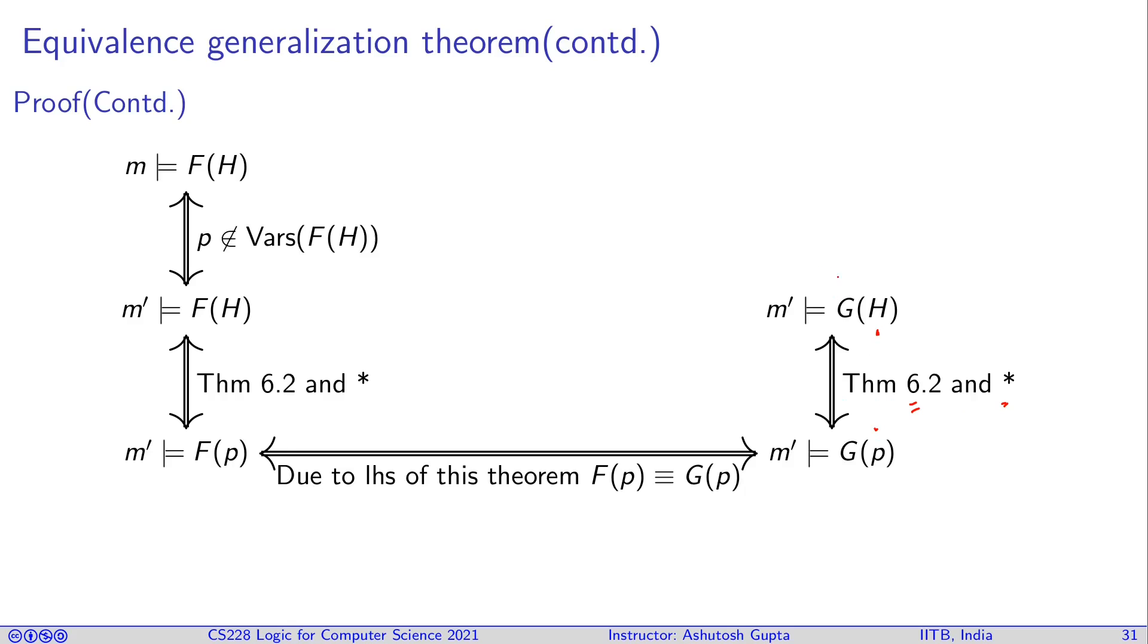Now, since G(H) does not have p, we can go back to model m and obtain that m satisfies G(H). So we started with the assumption m satisfies F(H) and obtained m satisfies G(H). Since the whole process is symmetric, we can assume m satisfies G(H) and get m satisfies F(H). So we've proven there is an if and only if.